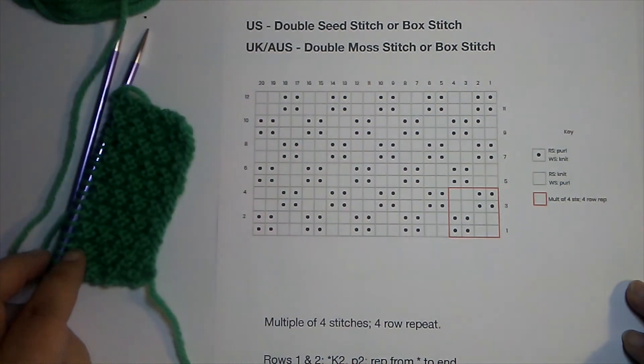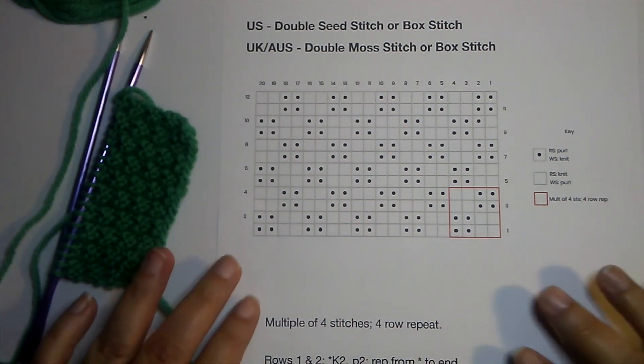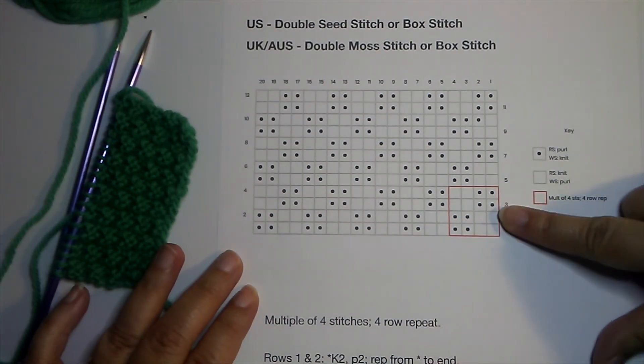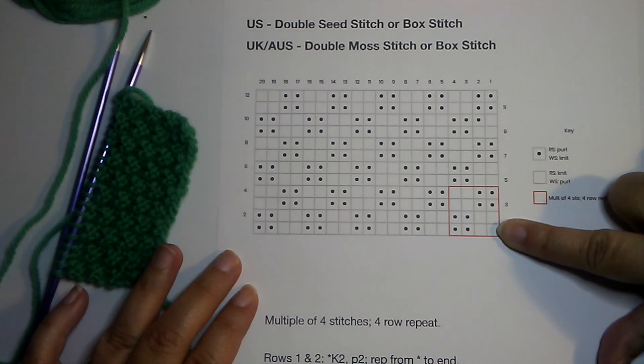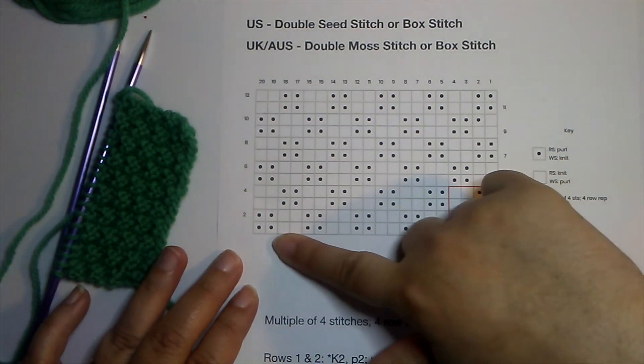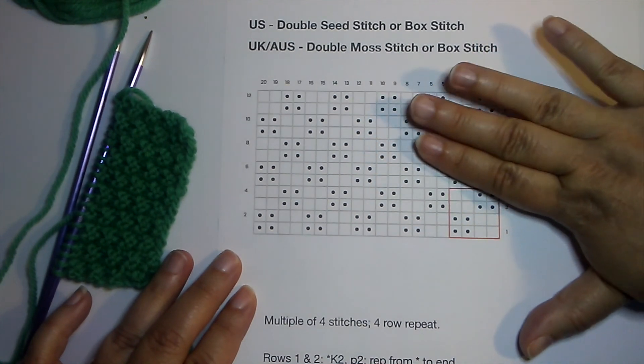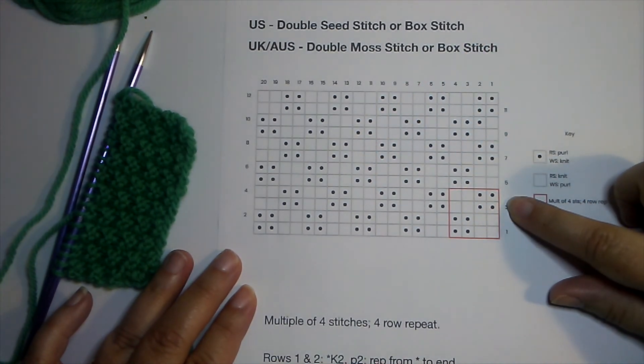Let's start by looking at the chart. If you look at the first two rows, you can see that it's a knit two, purl two pattern. And if we just continued that, then we would have a knit two, purl two rib.